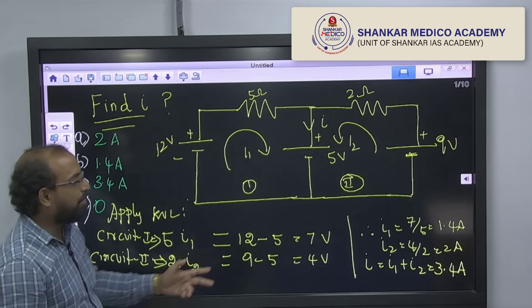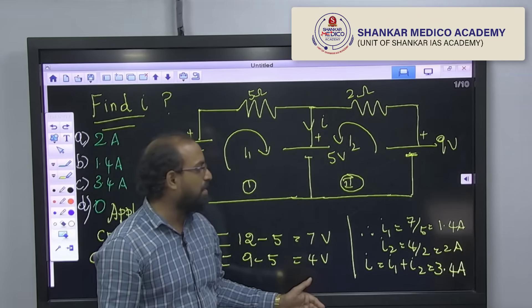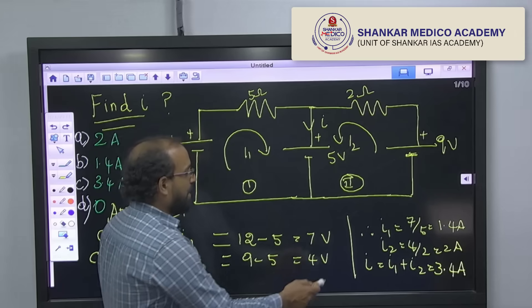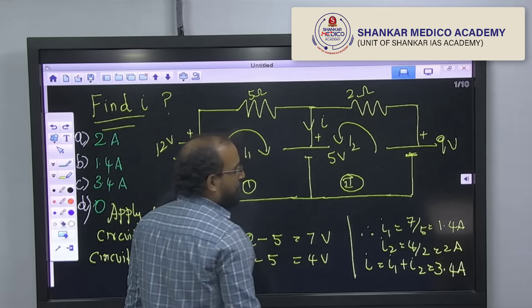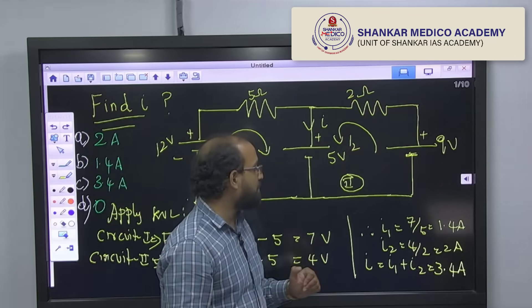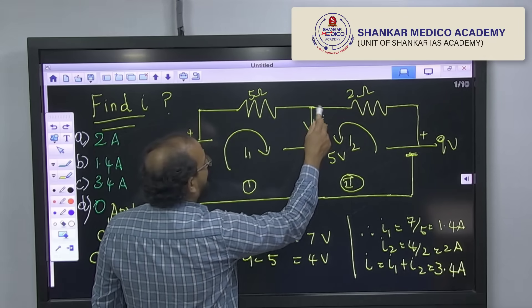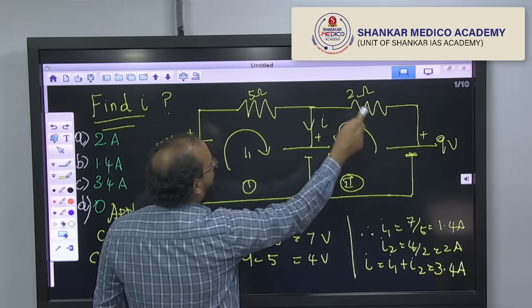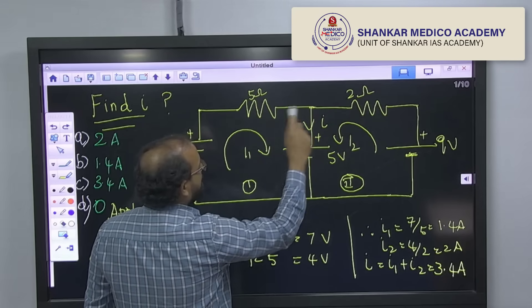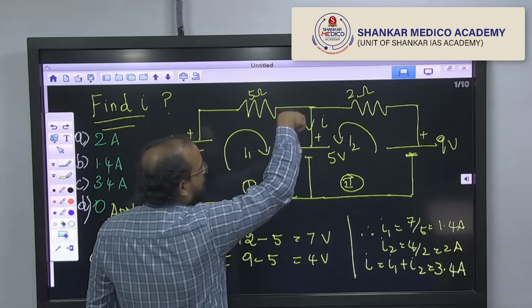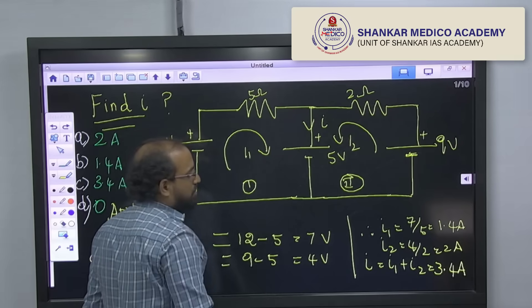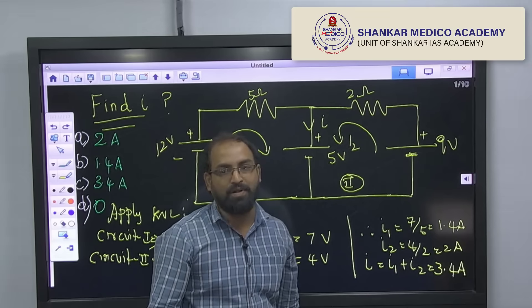Now, you have two equations. Mathematically, just to solve the two linear equation, we will end up with the answer I1 is equal to 1.4 amps, I2 equal to 2 amps and your final answer that is I. This I is nothing but addition of I1 and I2. Because this I1 and I2 are flowing such that they are in the same direction. So, your answer will be 3.4 ampere.